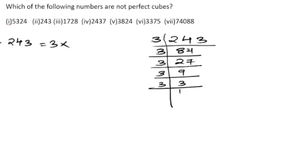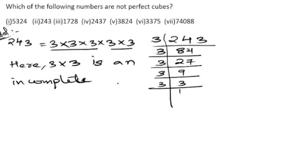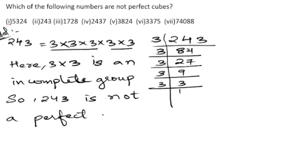So 243 = 3 × 3 × 3 × 3 × 3 × 3... we get triples of three, but then we are left with only two 3s remaining. We need one more 3 to make it a perfect cube. So 3 × 3 forms an incomplete group, and 243 is not a perfect cube.